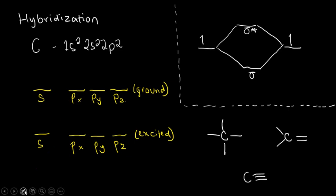If we go back to the electron configuration of carbon, we have 1s²2s²2p². Adding all of the electrons, the sum is 6, which is the atomic number of carbon — equivalent to the number of protons and also equivalent to the number of electrons. So we have 6 electrons for a single carbon atom.